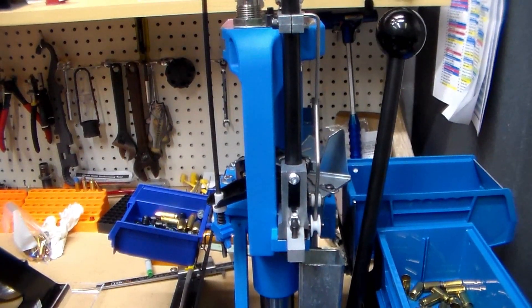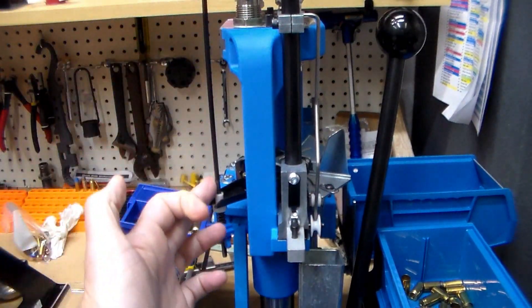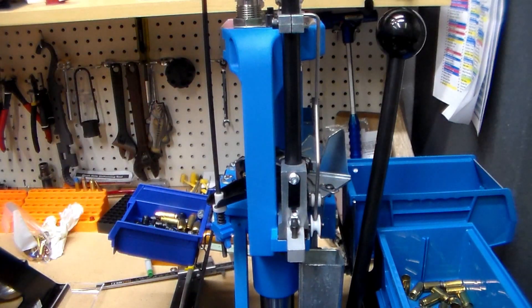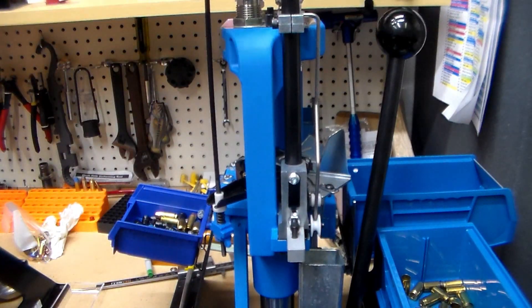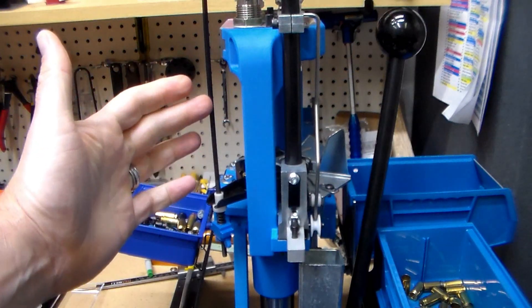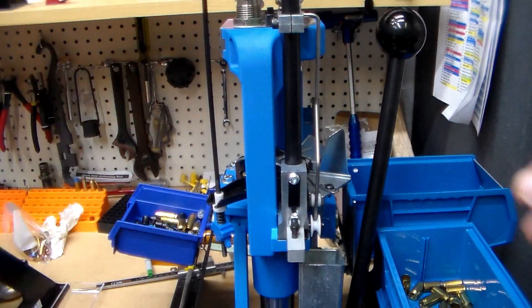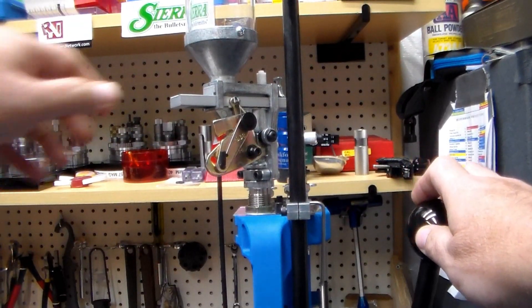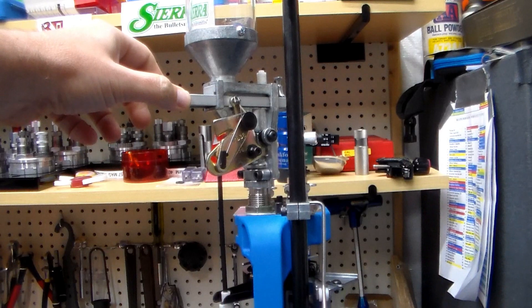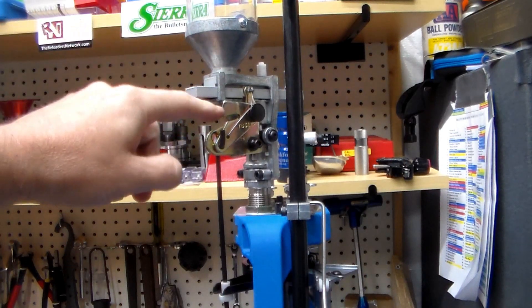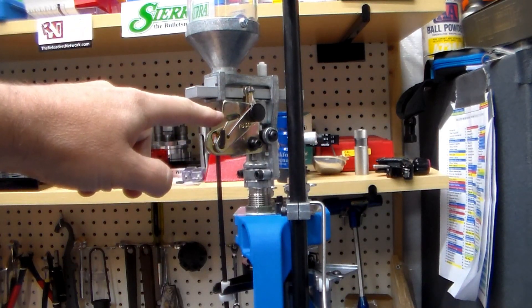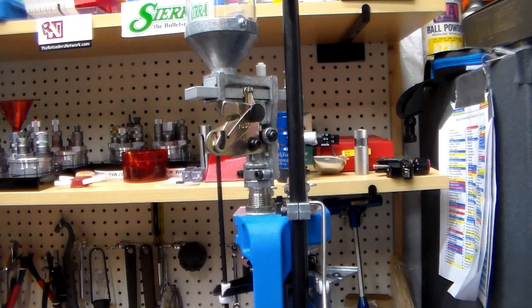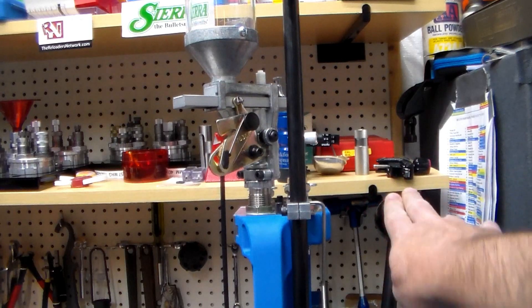But when I did that, this fail-safe rod, it binds up. I mean, I can't push it, it's really hard to push it this way because it binds up so bad. And then when you pull the lever down with it over like this, when it goes up it hits right here. I mean, you could force it on there but it jams up right there. I've been having a heck of a time with it.